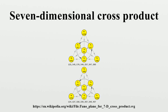The product can be given by a multiplication table, such as the one here. This table, due to Cayley, gives the product of basis vectors Ei and Ej for each i, j from 1 to 7. The table can be used to calculate the product of any two vectors. For example, to calculate the E1 component of X times Y, the basis vectors that multiply to produce E1 can be picked out; this can be repeated for the other six components.